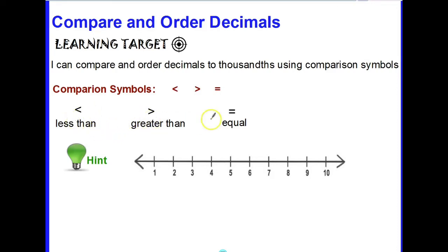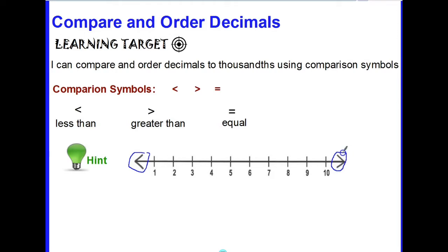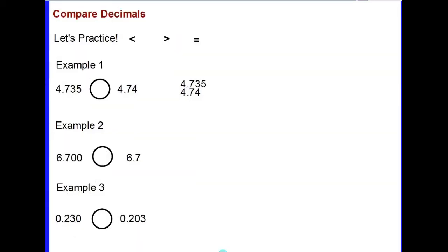Our comparison symbols represent less than, greater than, and equal to. A helpful hint: if you think about a number line where numbers decrease or get smaller, you will see the less than symbol at the end indicating a smaller number. As numbers increase or get greater, we see the greater than symbol at the end representing larger numbers.